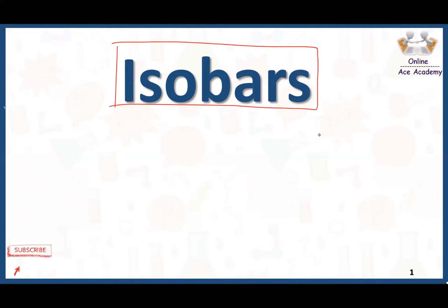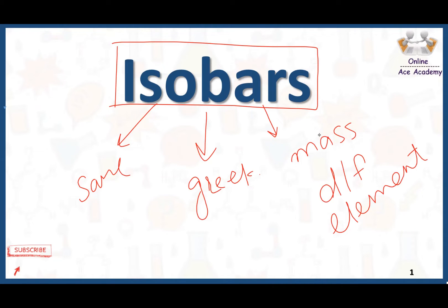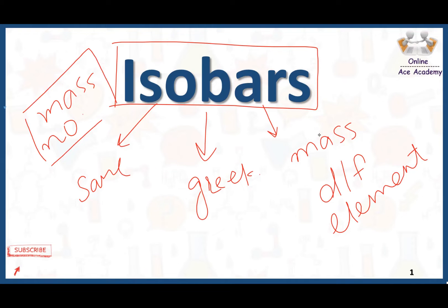Isobars is a Greek word in which iso means same and bars means mass. So isobars means something that has same mass. We have different kinds of elements in the periodic table and in our surroundings. These different elements have different atomic numbers, but somehow their mass number is the same. When there are different elements and their mass number is the same, this is called isobars.